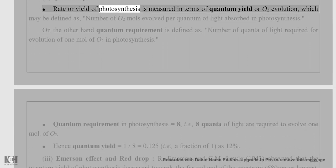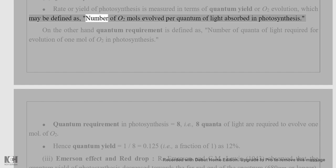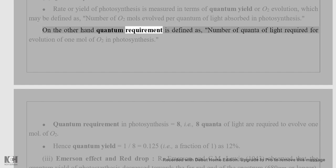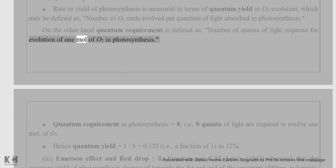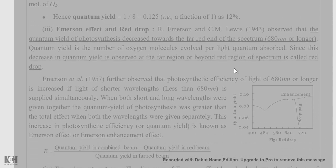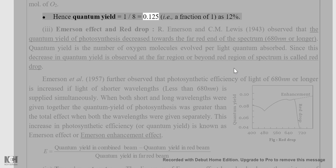Photosynthesis is measured in terms of quantum yield, defined as the number of O2 moles evolved per quantum of light absorbed. Quantum requirement is defined as the number of quanta of light required for evolution of one mole of O2. Quantum requirement in photosynthesis equals eight — i.e., eight quanta of light are required to evolve one mole of O2. Hence quantum yield equals 1/8 = 0.125, i.e., approximately 12.5%.